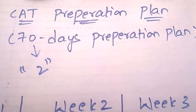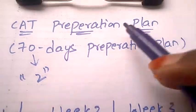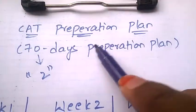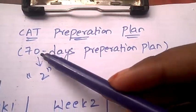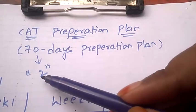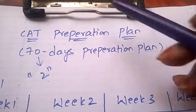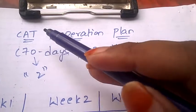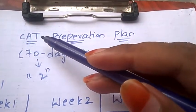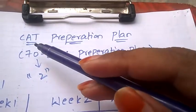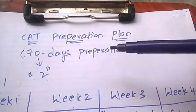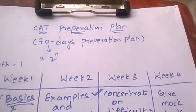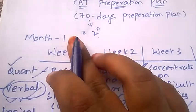Hello friends, welcome back to Best Way to Study. In this video we are going to see the CAT preparation plan. This is the 70 days, that is last two months, preparation plan for CAT. CAT stands for Common Admission Test, which you have to write in order to enter into MBA colleges.